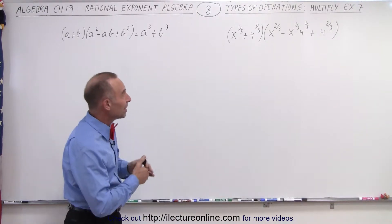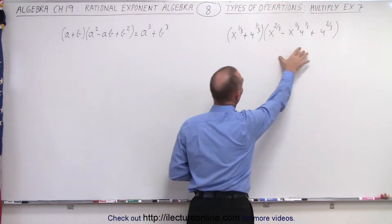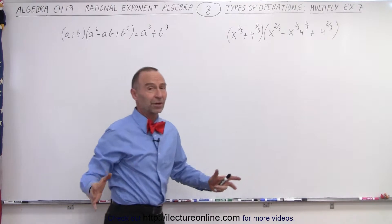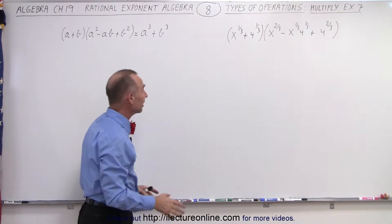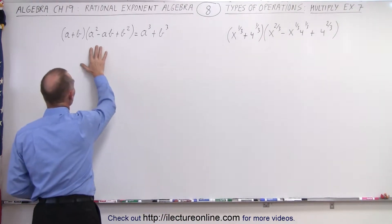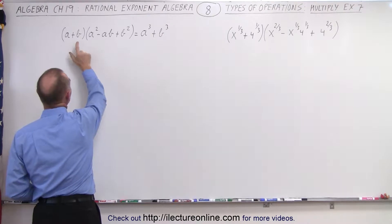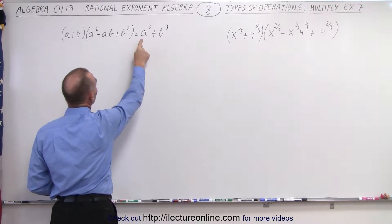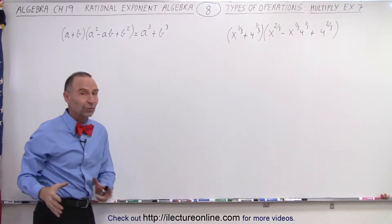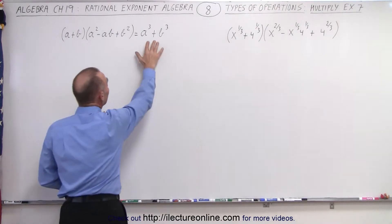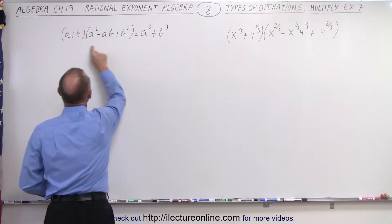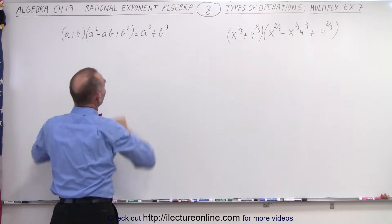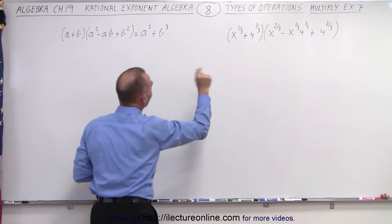Here we have a binomial multiplied times a trinomial, and you might think that doesn't look familiar at all. But actually, it is exactly the same as this: a plus b, times the quantity a squared minus ab plus b squared, equals a cubed plus b cubed. In other words, you've learned how to factor a cubed plus b cubed into this product, and you should be able to go back and forth — notice that it looks exactly the same.